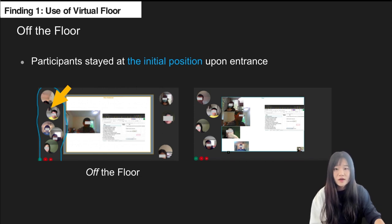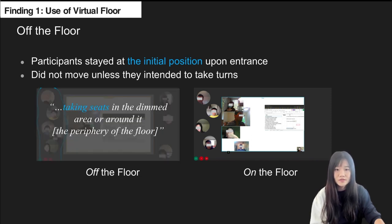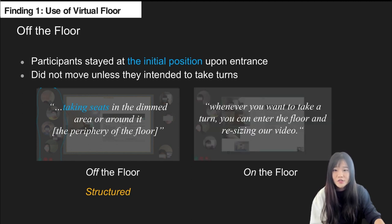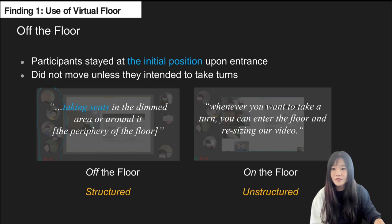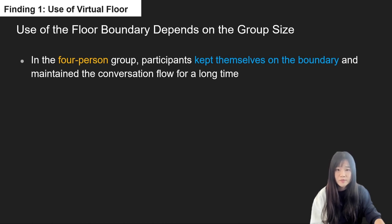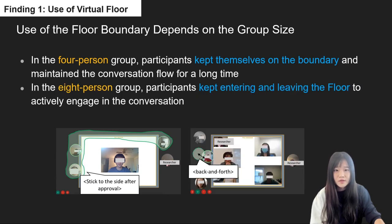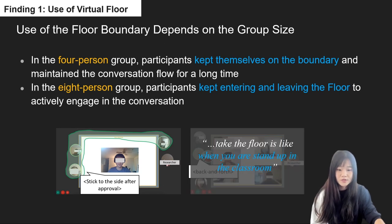Participants did not move their video feeds unless they intended to take turns on the floor. During the focus group interview, they mentioned they would like taking seats in the dimmed area or around it, which may indicate that structured video placement like Zoom might be suitable for audiences. However, they appreciated the flexibility of OpenMic's unstructured video placement when taking turns, allowing them to resize and reposition their video. Group size affected the use of the floor boundary. In four-person groups, participants kept themselves on the boundary and maintained conversation flow for a long time. In the eight-person group, they kept entering and leaving the floor to actively engage, with one participant describing the experience as like standing up in the classroom.